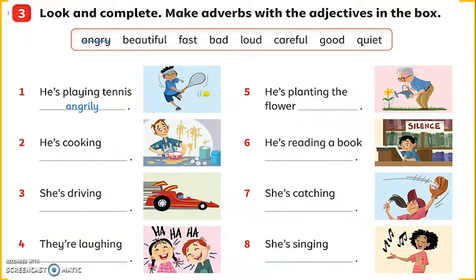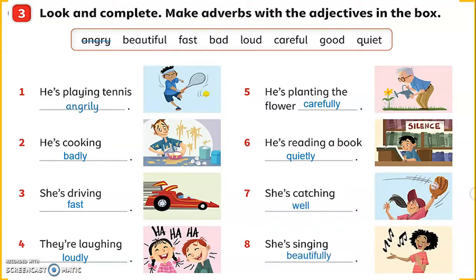In this part, you are going to look and complete — making adverbs from the adjectives in the box. Number one is given: he's playing tennis angrily. Number two: he's cooking badly. Number three: she's driving fast. Number four: they are laughing loudly. Number five: he's planting the flower carefully. Number six: he's reading a book quietly. And number seven: she's singing beautifully.